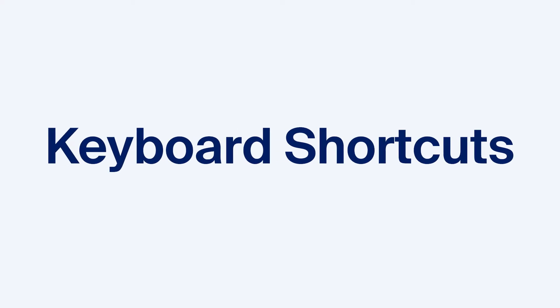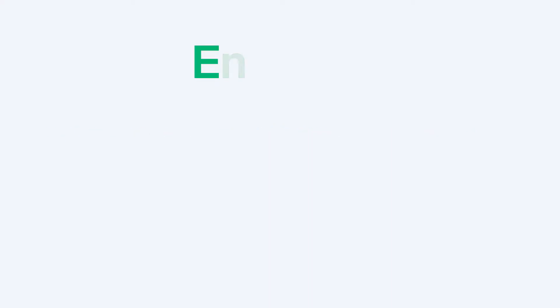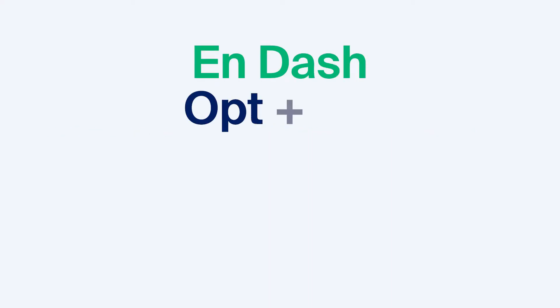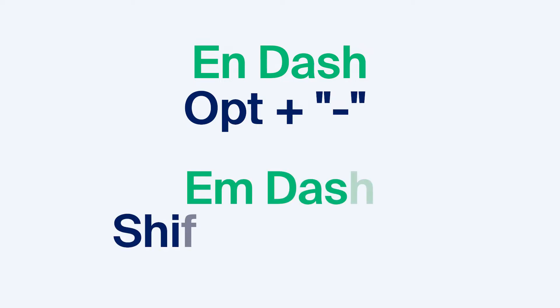Finally, on a Mac computer you can create dashes using keyboard shortcuts. For an N dash, this means holding down option and typing a hyphen. For an M dash, you can hold down shift and option then type a hyphen.